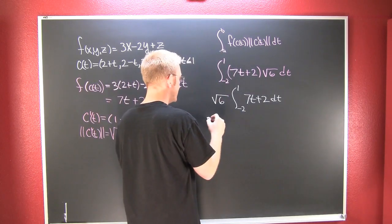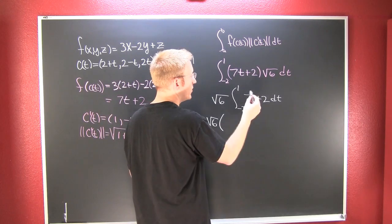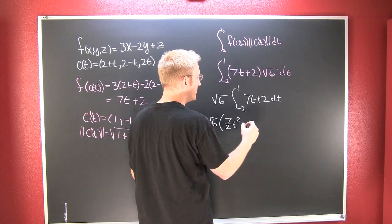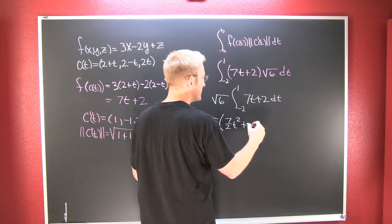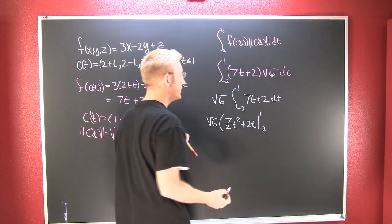And then I'm integrating from minus 2 to 1 of 7T plus 2 DT. And I integrate this. That's the square root of 6 times the quantity. This looks like 7 halves T squared plus 2T from minus 2 to 1.